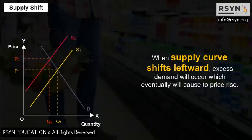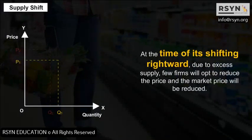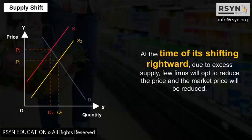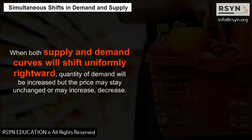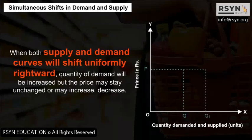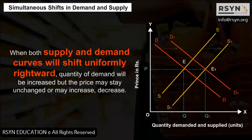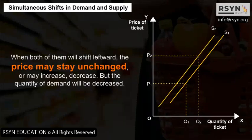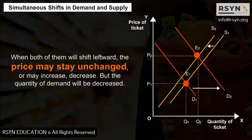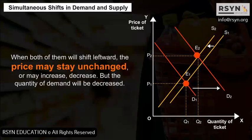Supply Shift and Simultaneous Shifts: If the number of consumers increases, the demand curve shifts rightward. When the supply curve shifts leftward, excess demand occurs, causing prices to rise. When it shifts rightward, due to excess supply, some firms opt to reduce the price and market price falls. When both supply and demand curves shift uniformly rightward, quantity demanded increases but price may stay unchanged, increase, or decrease. When both shift leftward, price may stay unchanged, increase, or decrease, but quantity demanded decreases.